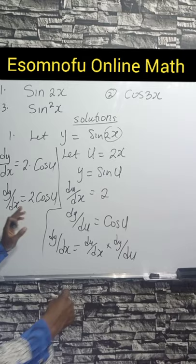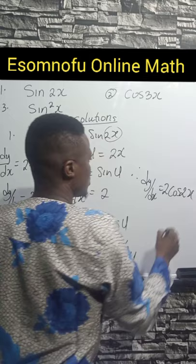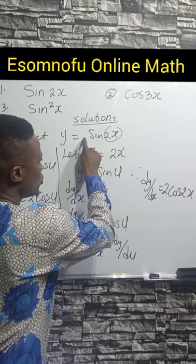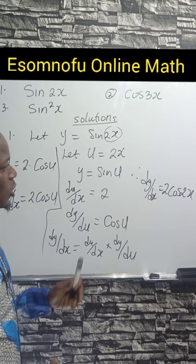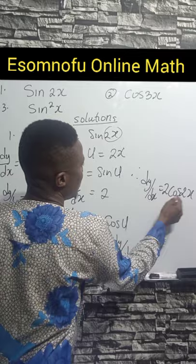Therefore, finally, dy/dx equals 2cos(2x) as the answer. There is also a short way to do this: sin(2x) differentiates to cos(2x), then you differentiate 2x to get 2 and multiply it in, giving 2cos(2x). That's the short trick. But in a formal working, you need to show the full steps. Just note that sin(2x) turns to cos(2x), differentiate the inner term, and multiply to get your answer.